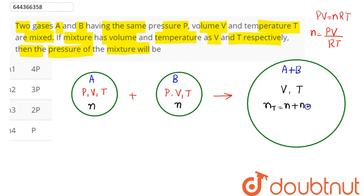So we can say here the total pressure can be written for the mixture as P' into V is equal to n, here is 2n, into R into temperature as T.